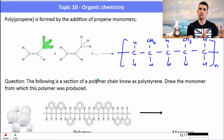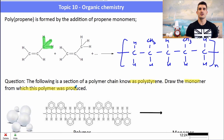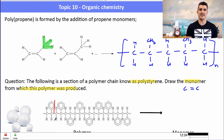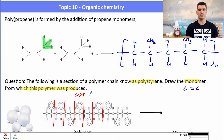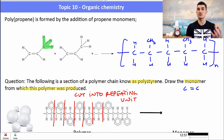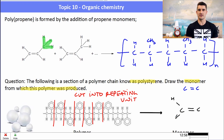Given a section of a polymer chain, we can identify the monomer by finding the repeating unit. For polystyrene, we look for the pattern that repeats and cut the chain at appropriate points. The repeating unit contains a phenyl group (benzene ring). The monomer therefore has a C=C double bond with two hydrogens on one carbon and a phenyl group plus one hydrogen on the other carbon.